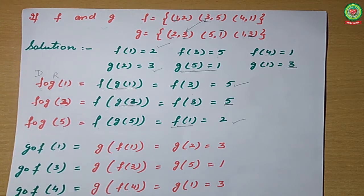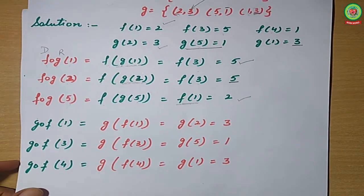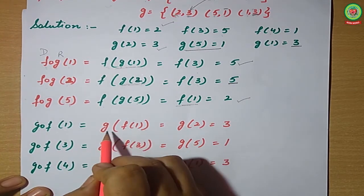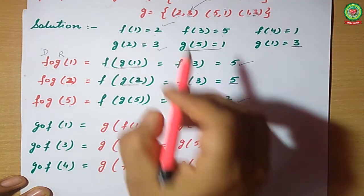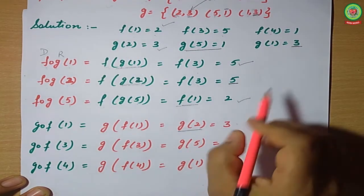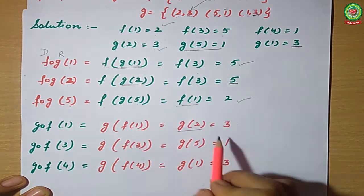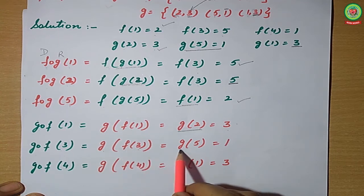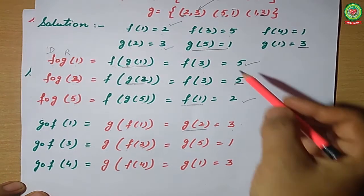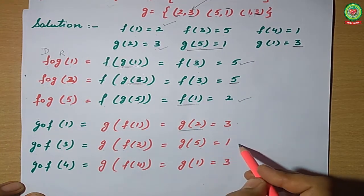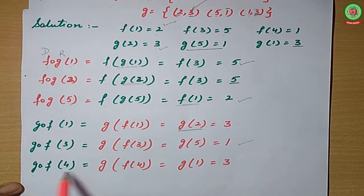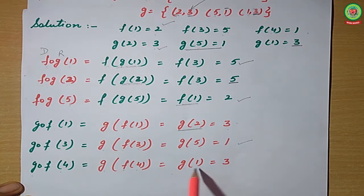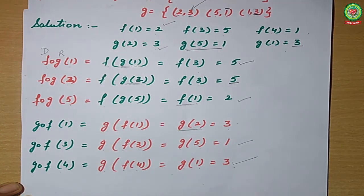Now we will find gof. gof(1) = g(f(1)) = g(2) = 3. gof(3) = g(f(3)) = g(5) = 1. gof(4) = g(f(4)) = g(1) = 3. Simple.